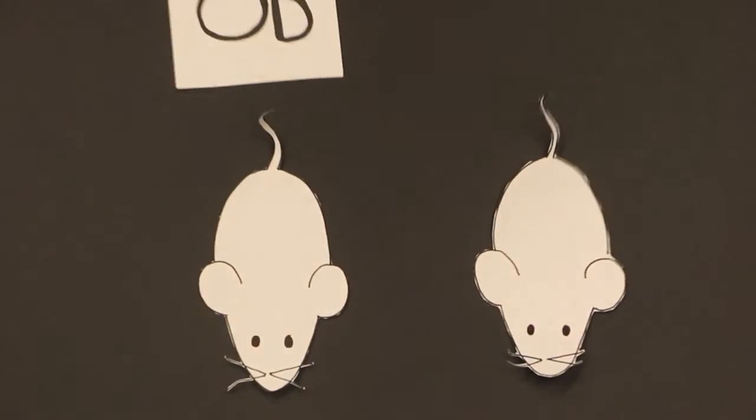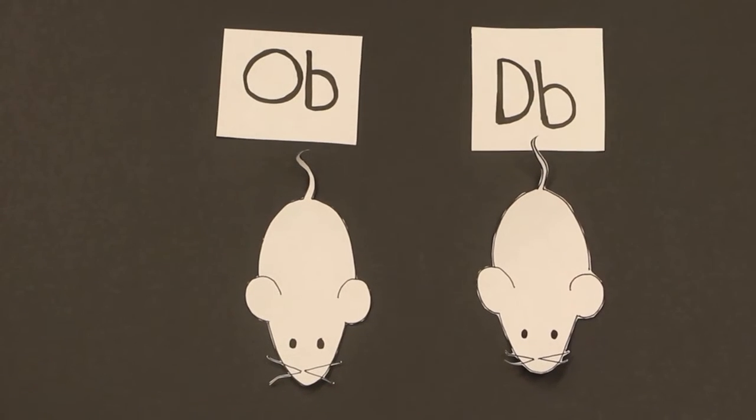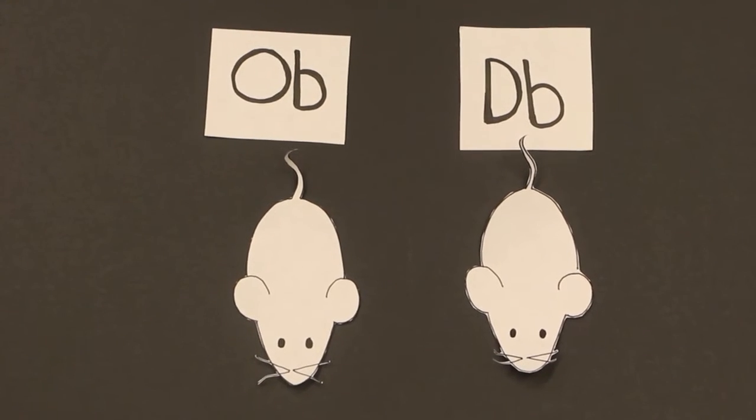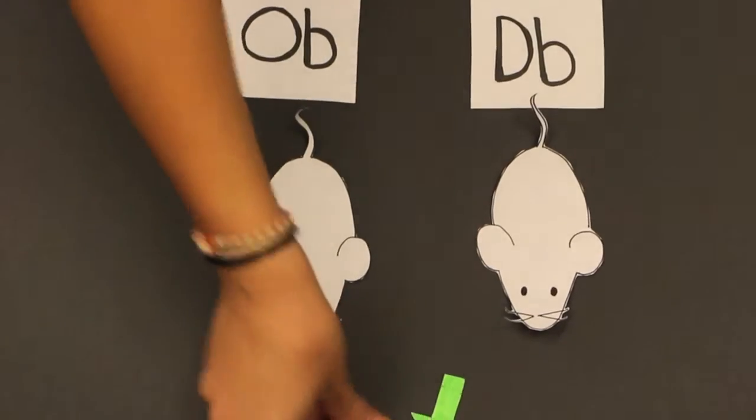Obese mice are mice that have a mutation of the OB gene. Diabetic mice have a mutation of the DB gene. For the remainder of this video, we will be referring to the mice by their mutated genes. Researchers were interested in these genes because mutations produce identical phenotypes of weight gain.